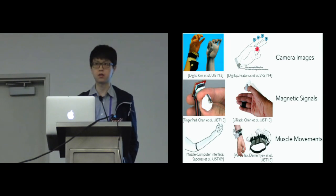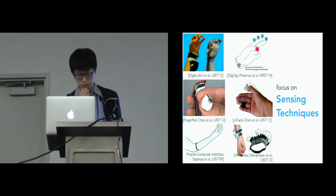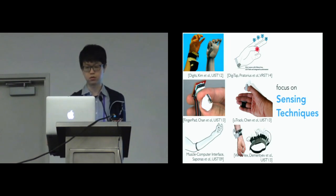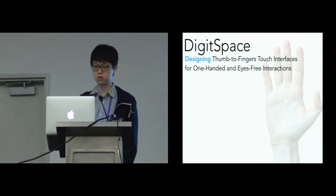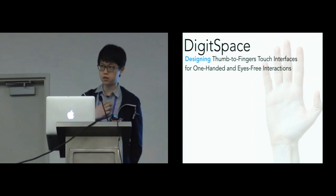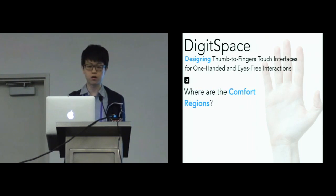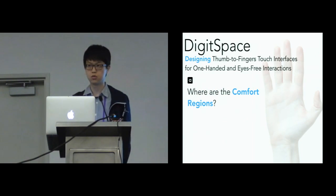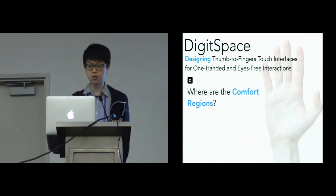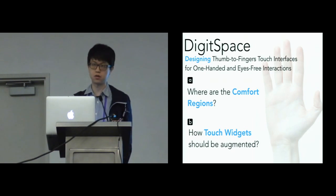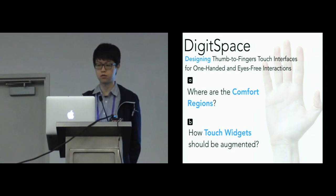Previous work is amazing, mainly focusing on sensing techniques. In comparison, our work aims to understand how to design effective thumb-to-fingers touch interfaces for one-handed and eyes-free interactions. We ask ourselves two questions: first, where are the comfort regions on the fingers to allow users to easily manipulate touch widgets? Second, how should touch widgets be augmented — what is the number, the limitation, and the proper layout?